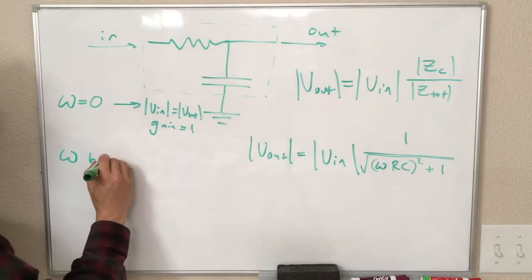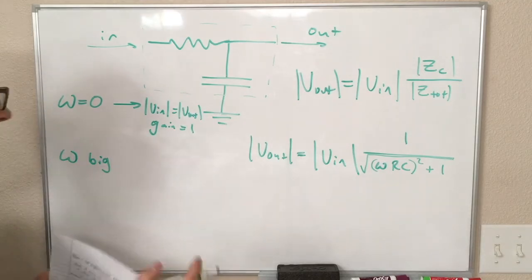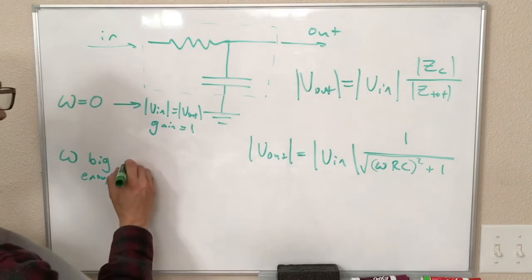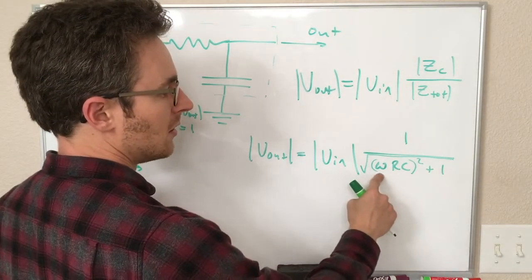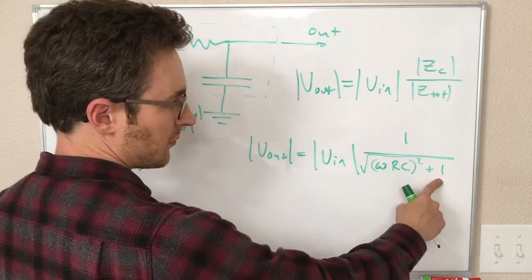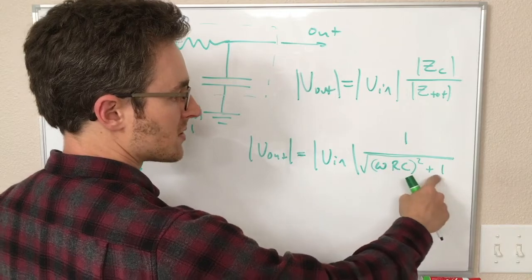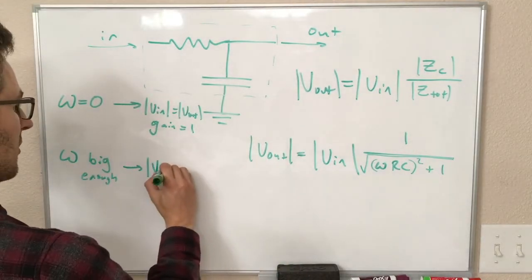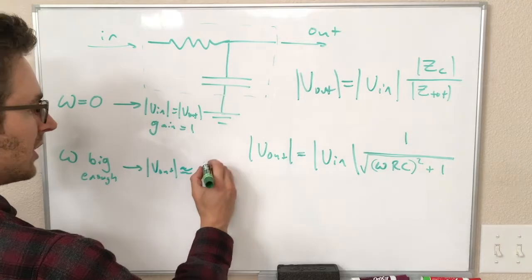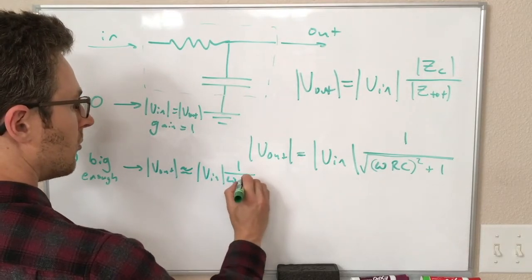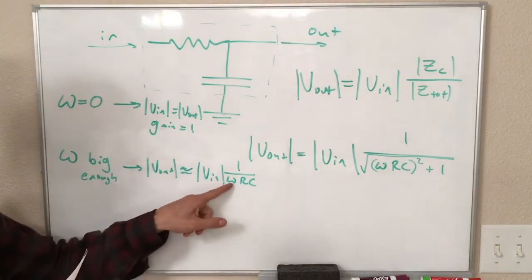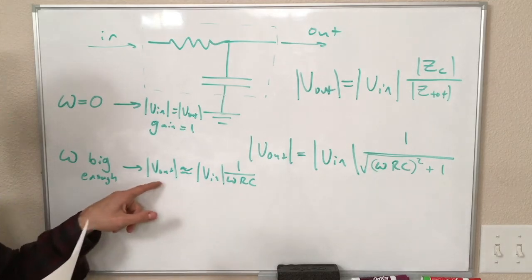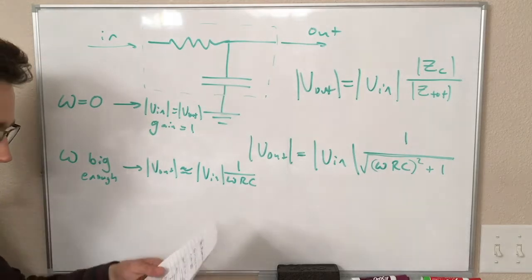If omega is big, and in this case, we'll define big in a second, but maybe I should say big enough, and we'll define enough later. If omega is big enough, then this omega RC squared term is going to dominate in the denominator. We're going to end up with omega RC squared, which is really big, plus something really small that doesn't matter. This is approximately equal to 1 over omega RC.